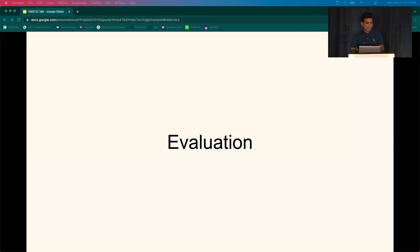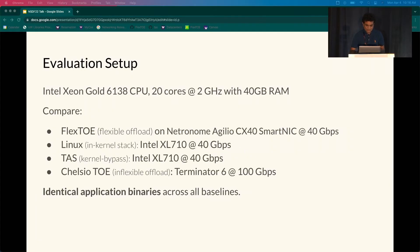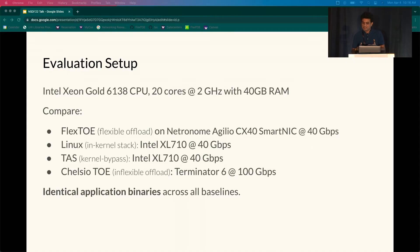In our evaluation setup, we use a host with 20 cores operating at 2 GHz and 40 GB of RAM. We primarily prototype Flexto on a Netronome Agilio CX40 SmartNIC and compare it with the Linux in-kernel stack and TAS kernel bypass TCP stack. We also use the Chelsea Terminator NIC as a comparison point for commercially available inflexible TCP offload engines. Across all baselines, we use identical application binaries.